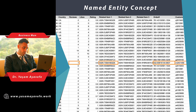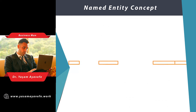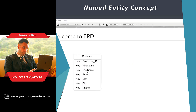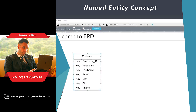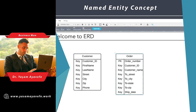Initially, the proposed concept of named entities encompasses the concepts of time, currency, and percentage, as well as the names of people, organizations, and geographic locations.